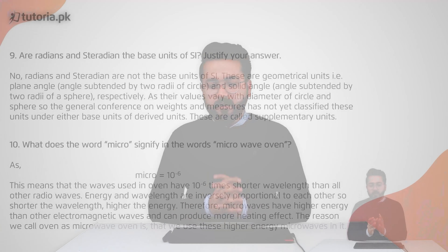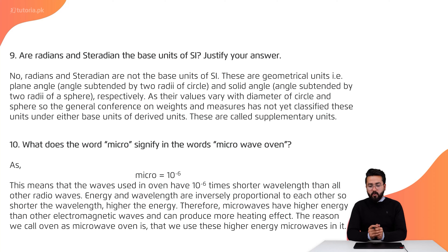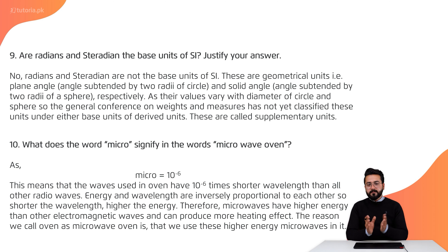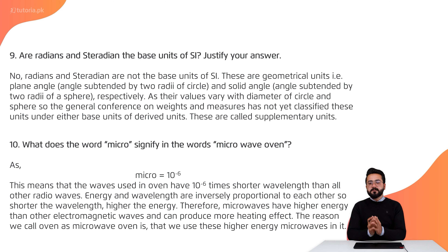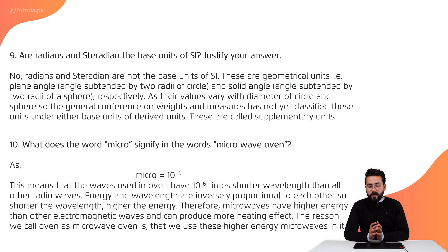What does the word micro signify in the words microwave oven? Why do we use the word micro in microwave oven? First, we will see what micro is equal to and its value. Micro is a prefix which is 10 raised to power minus 6. This means that the waves used in the oven have 10 raised to power minus 6 times shorter wavelength.